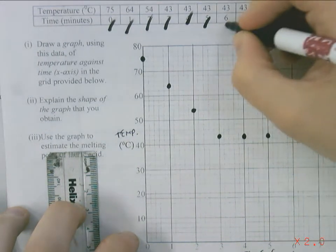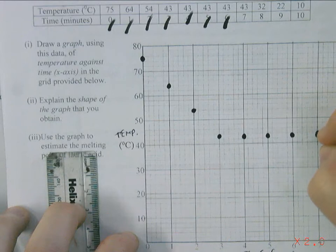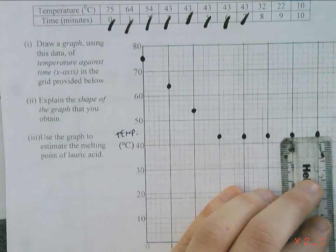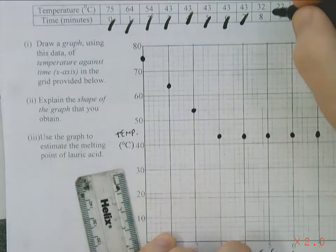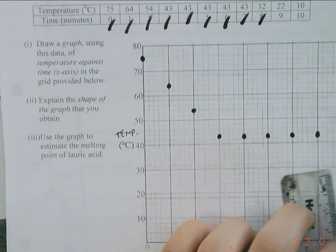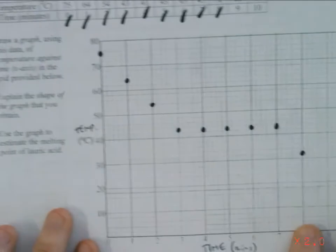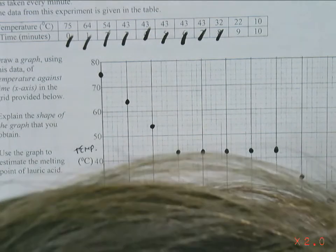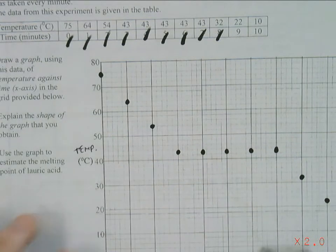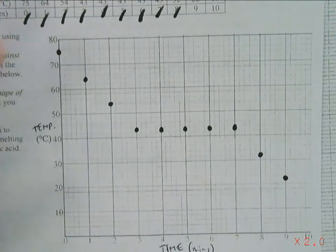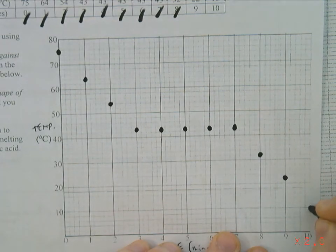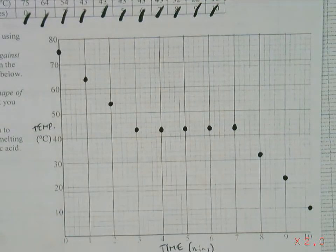Six, 43. Okay, the next one is the same again — seven, 43. The next one after that — eight, 32. Good. And there, the next one — Kevin. Yeah, okay — nine, 22. Yeah. So these lines have cut off me there. Okay, and then the very last one — Andrea — ten and ten. Okay, so it's just there.